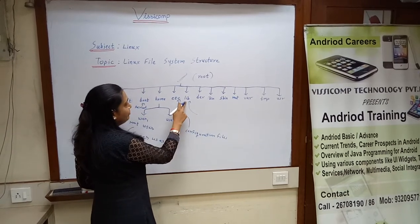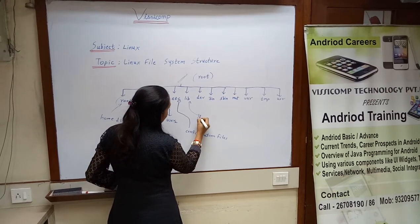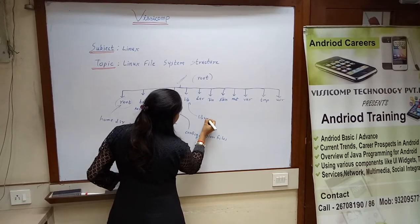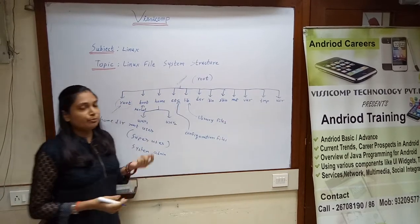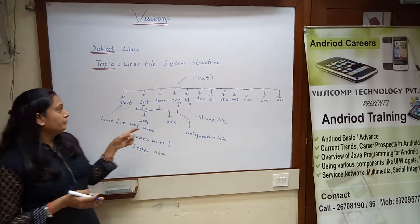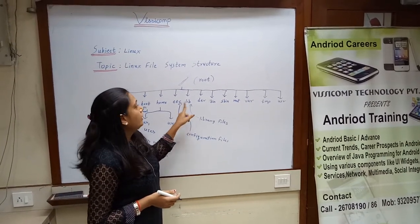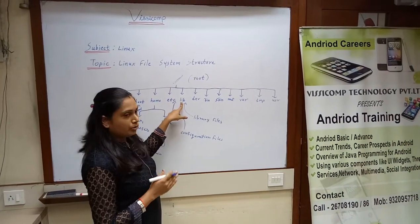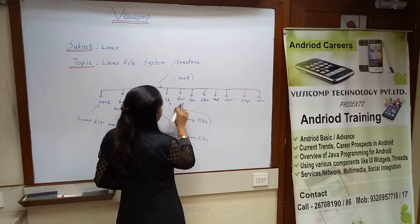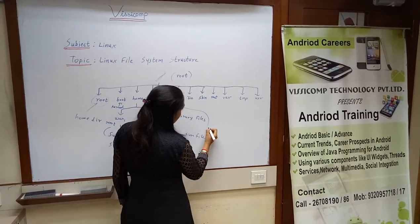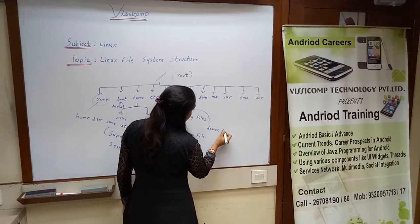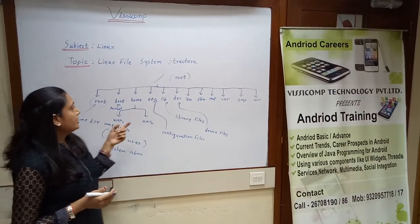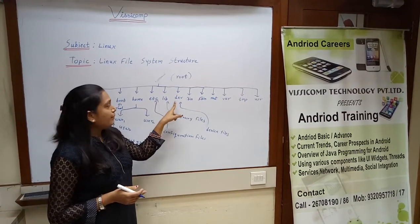Next is the lib directory. This contains all library files. As the name indicates, the dev directory stores information related to device files. For example, mouse-related, keyboard, CPU information — all device-related files are kept in this directory.